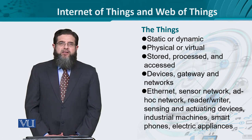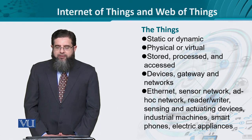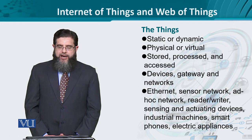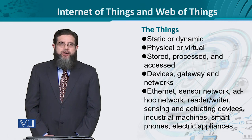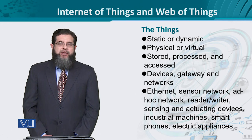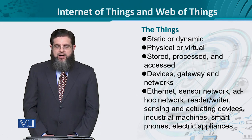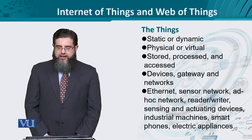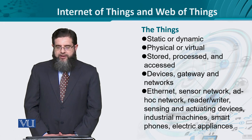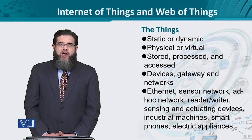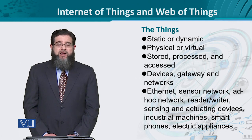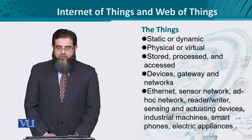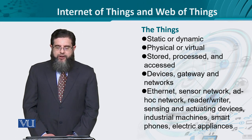So let's quickly look at what the 'things' are — if that's a mystery, let's resolve it here. Things literally means everything. It could be a static or a dynamic thing; it could be a physical or a virtual thing. A physical thing means something that you can sense using your physical senses, or virtual — something you can feel. These things actually generate data which can be stored, processed, and accessed by other things. Devices — including end hosts and gateways — even the networks, are all included in these things.